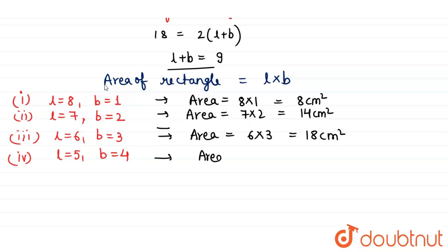For the fourth and the last case, the area will be 5 into 4, that is 20 centimeters square. So this is our final answer.